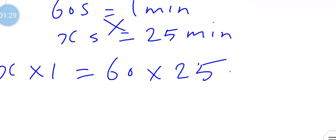So x times 1, we have x here equals now 60 times 25. That will give us 1,500 seconds.